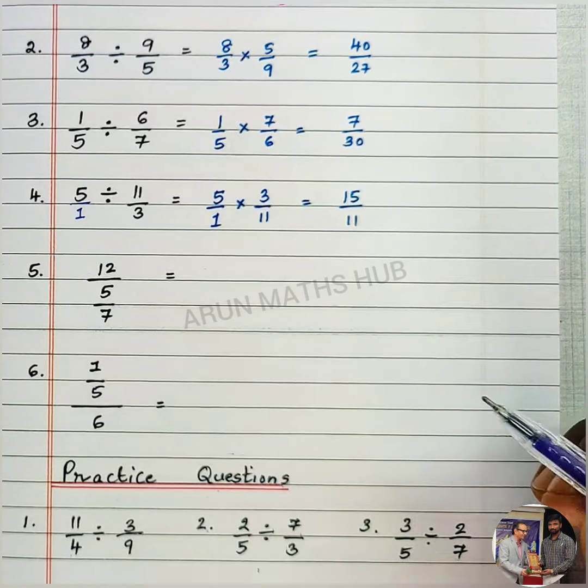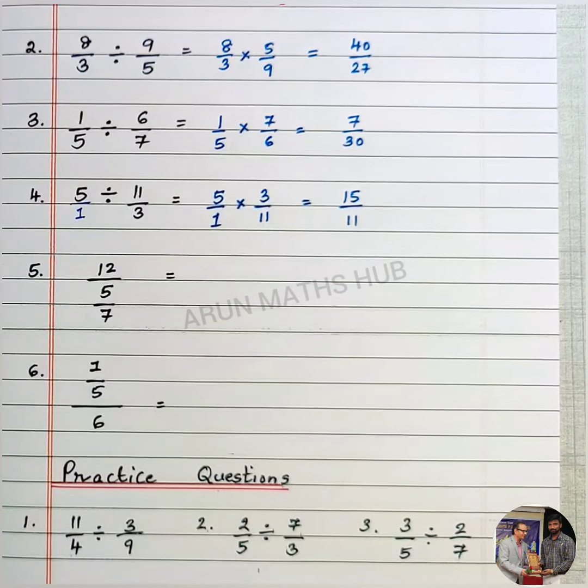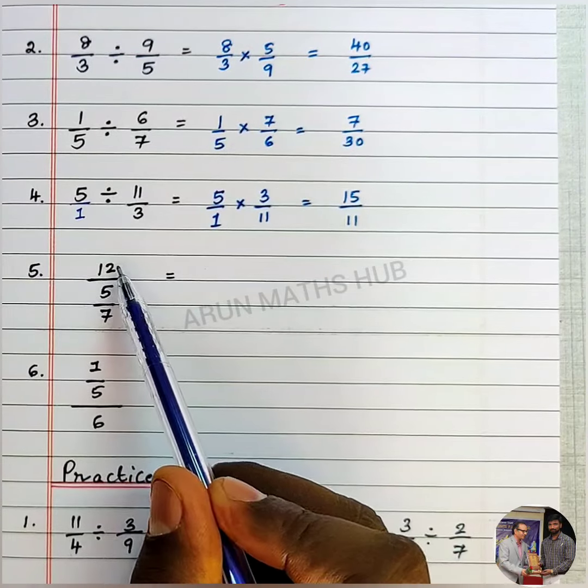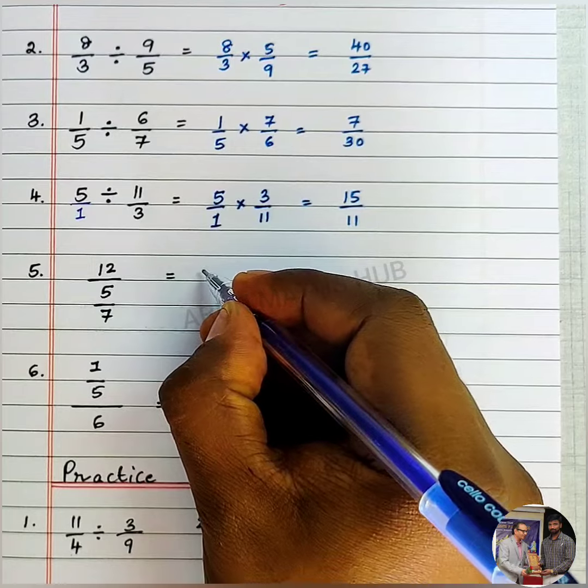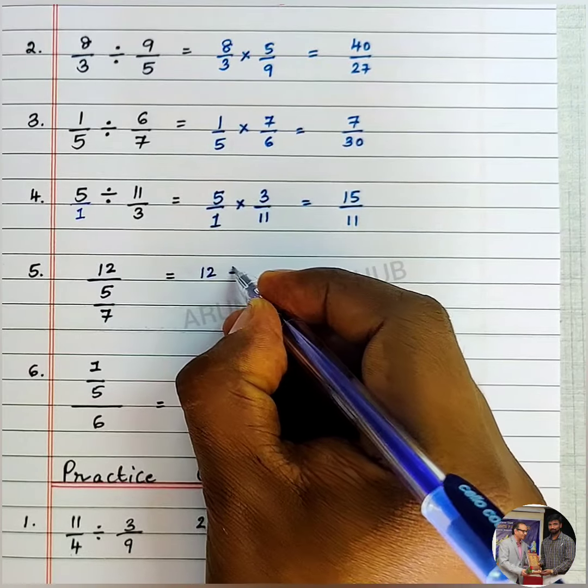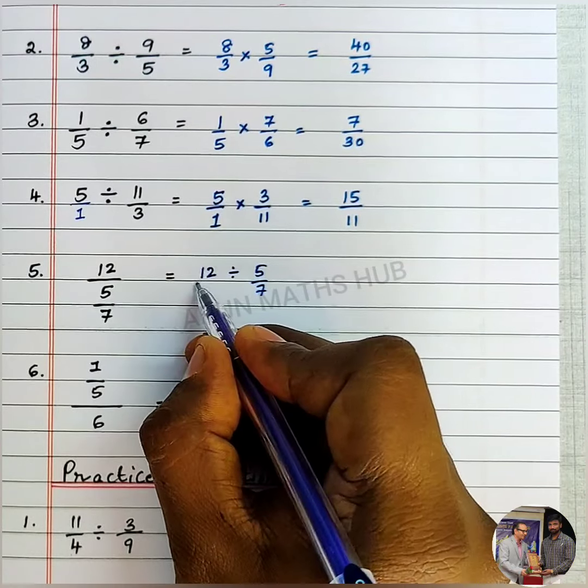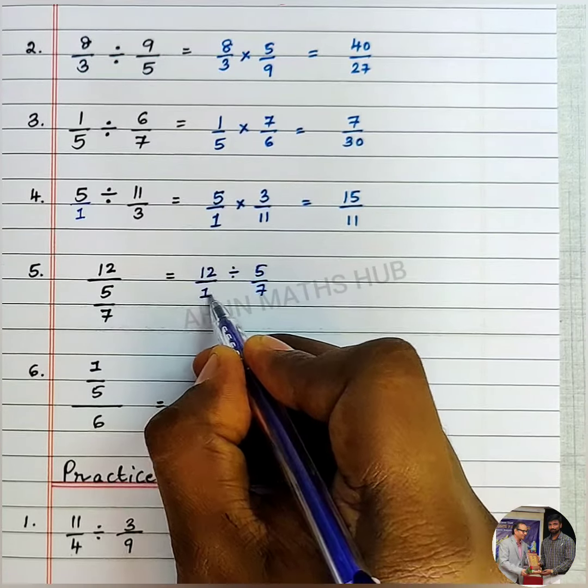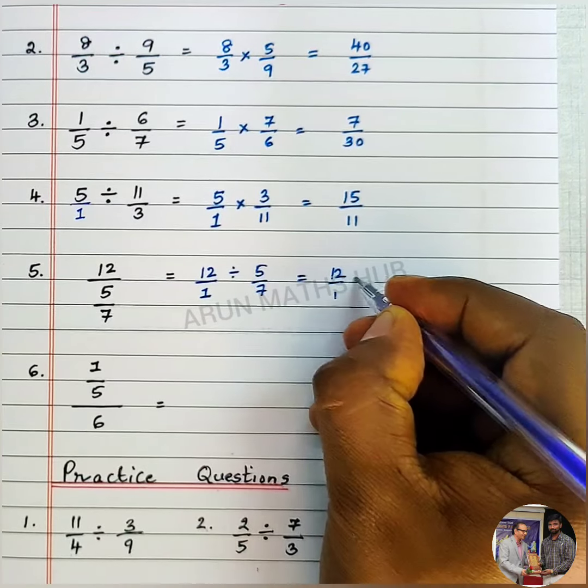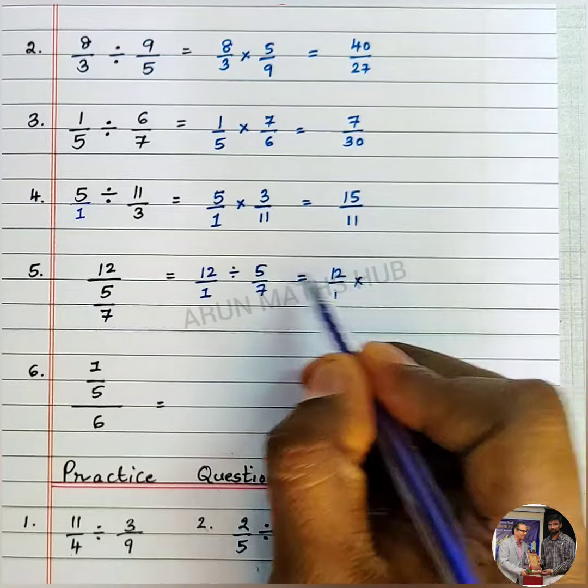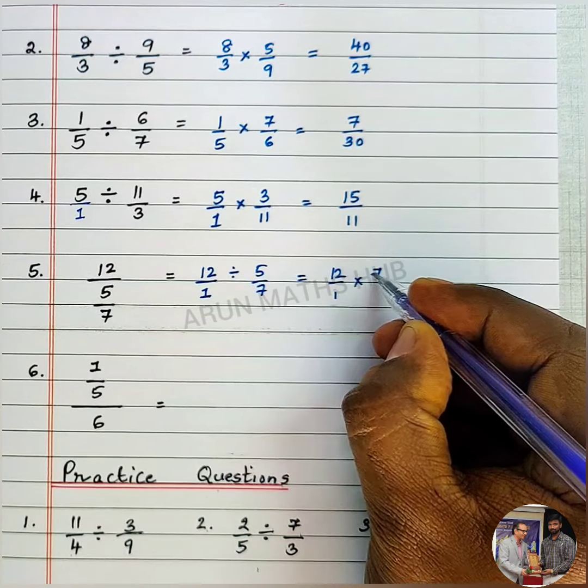Here 12 divided by 5/7. This is a whole number, I will write 12 as 12/1. Now 12/1 into - division becomes multiplication and change the reciprocal - that is 7/5. 12 times 7 is 84, 5 times 1 is 5.